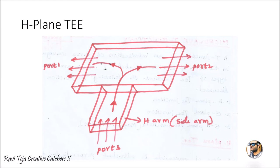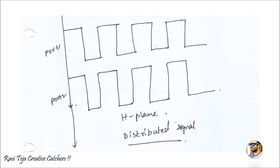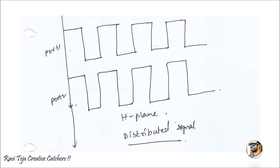You can see here the signal of an H-plane T — the distributed signal coming out of port 1 and port 2. You can clearly observe that there is no phase shift. The signal is equally distributed from port 1 and port 2. When port 1 delivers a positive cycle, port 2 also delivers a positive cycle; when port 1 delivers a negative cycle, port 2 also delivers a negative cycle. There is no 180-degree phase shift in an H-plane T, unlike in an E-plane T.